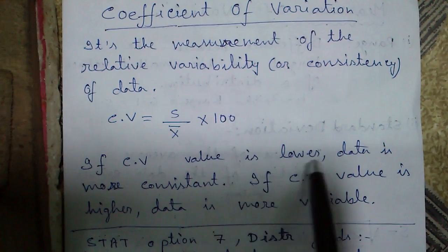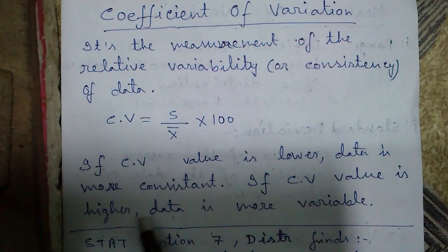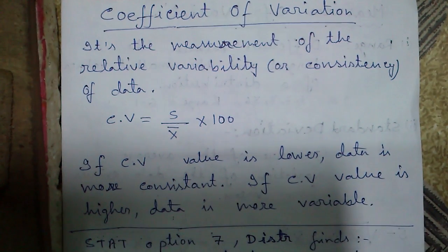If the CV value is lower, data is more consistent or closely bounded and if the CV value is higher, the data is more variable or loosely bounded.